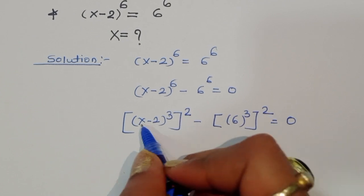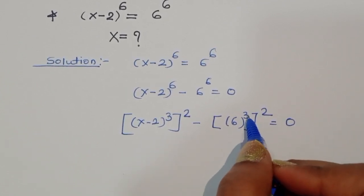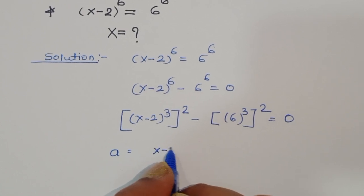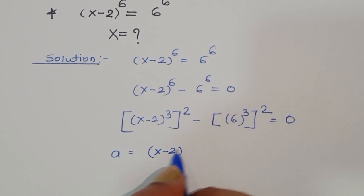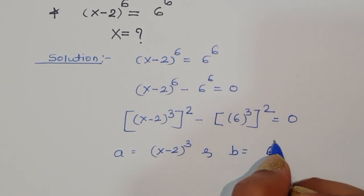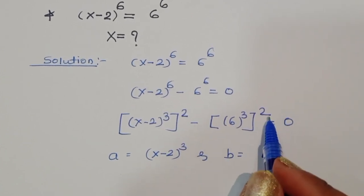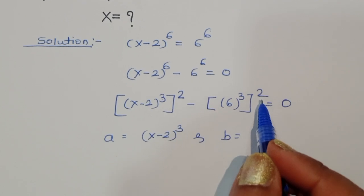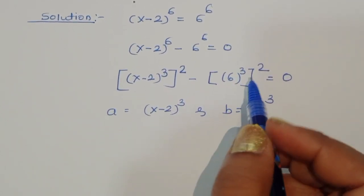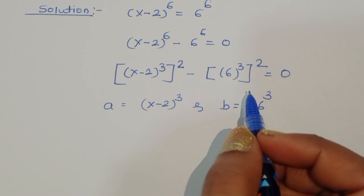Here a is (x minus 2)^3 and b is 6^3. So we apply the a² minus b² formula, which gives a² minus b² equals (a plus b)(a minus b).